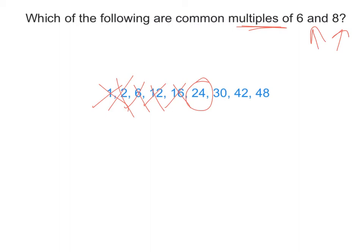Can 6 go into 30? It can — it goes in 5 times. Can 8 go into 30? It can't. Can 6 go into 42? It can, but 8 can't go into 42. Can 6 go into 48? 6 goes in 8 times, so I know conversely 8 goes into 48 six times. So 24 and 48 are common multiples.